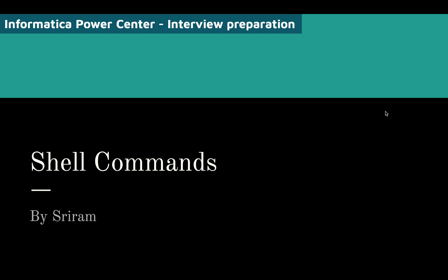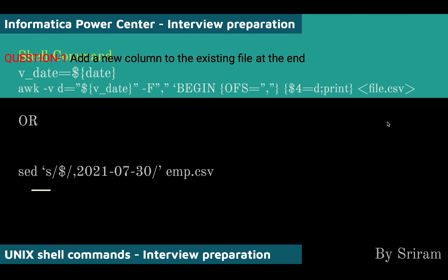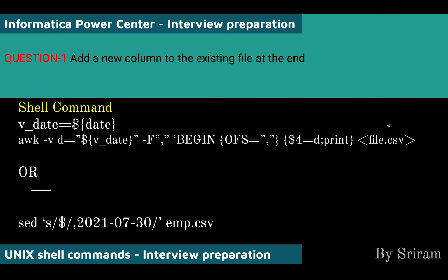Let us start. The first question is: how to add a new column of values to an existing file at the last position. I have two shell commands here — one is AWK and one is SED. These are two powerful tools we have for UNIX shell scripting.